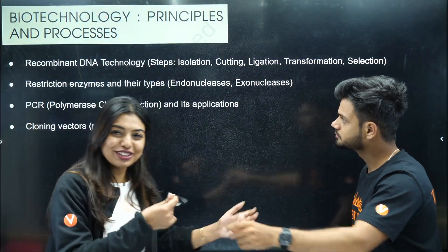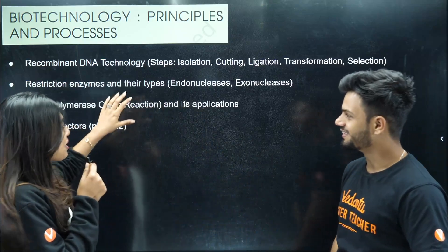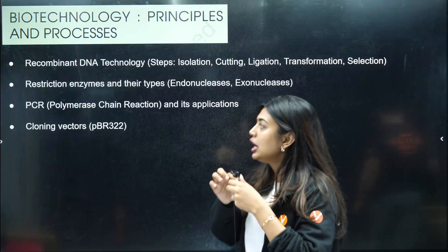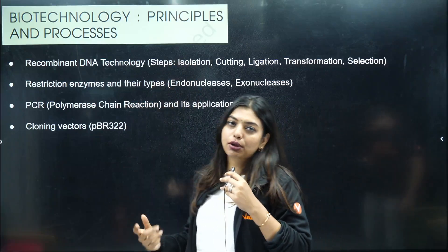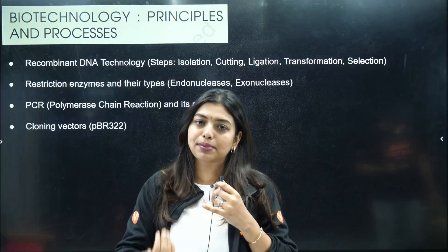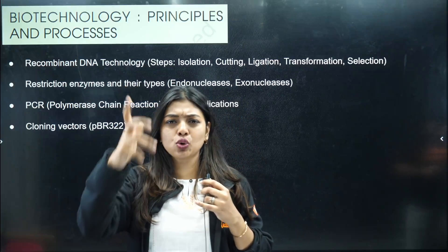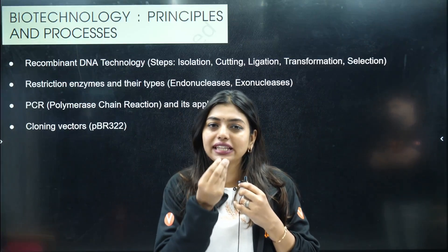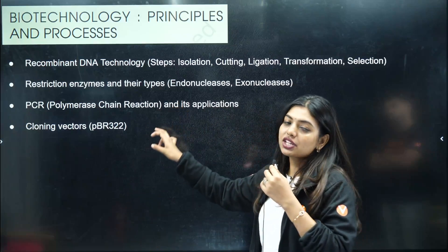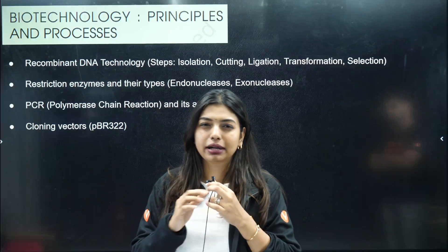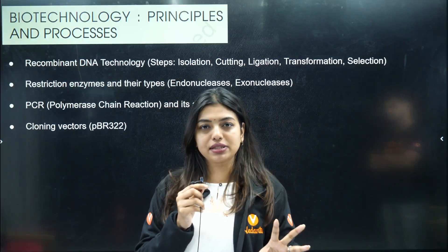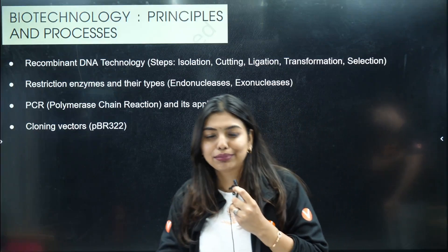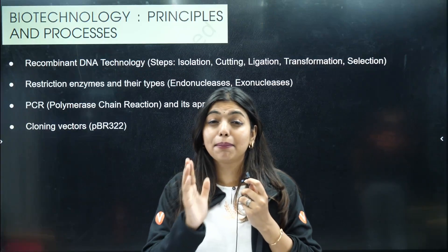Biotechnology. I have posted a video about principles and processes — under one hour — so definitely check out the lecture to understand the important topics. They will ask you recombinant DNA technology — mainly the steps involved. Remember the steps; it's like storytelling. Next is restriction enzyme — endonuclease vs. exonuclease — they can ask you the difference; it's a very simple difference, learn that also. Polymerase chain reaction — asked multiple times. They probably won't expect you to draw the diagram, but at least know the steps involved, because they can give the diagram and ask you to identify it. And cloning vector — repeated maximum times — PBR 322. Please draw and learn it before the exam.